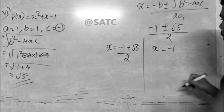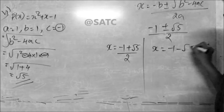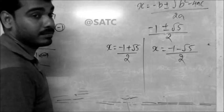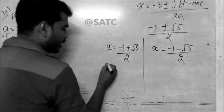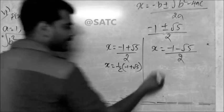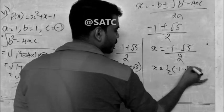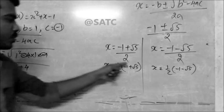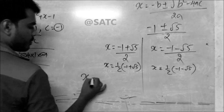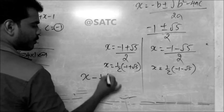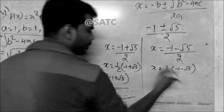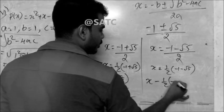X is equal to minus 1, plus root of 5 divided by 2. X is equal to minus 1 minus root of 5 divided by 2. So this is the half of minus 1 plus 2. E per half of minus 1 plus 2.